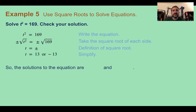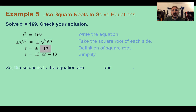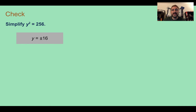Example 5: Use square roots to solve t squared equals 169. To get t by itself, we take the square root of both sides, giving t equals plus or minus 13, because 13 times 13 is 169. So our final answers are t equals positive 13 and t equals negative 13. Check your understanding: Solve y squared equals 256. You should get y equals plus or minus 16, because 16 times 16 is 256.